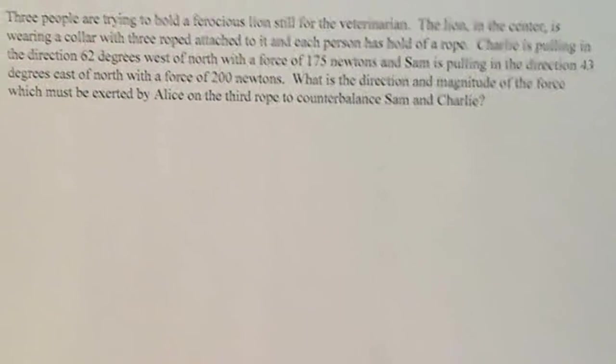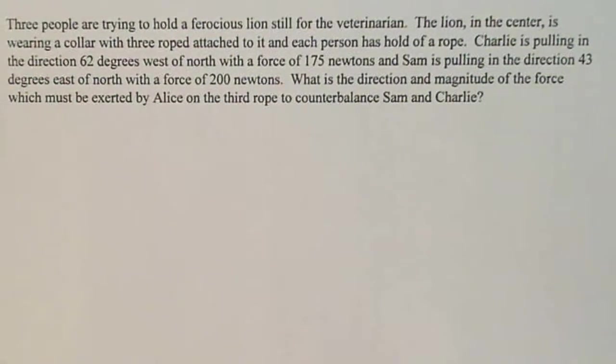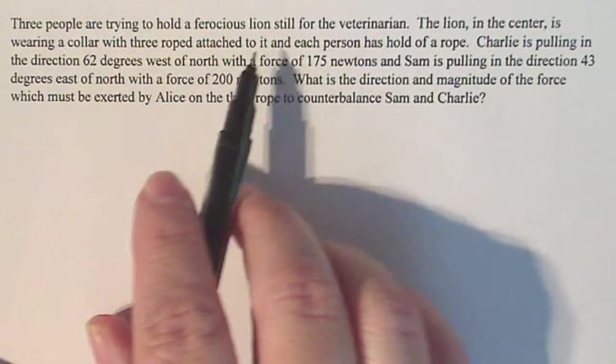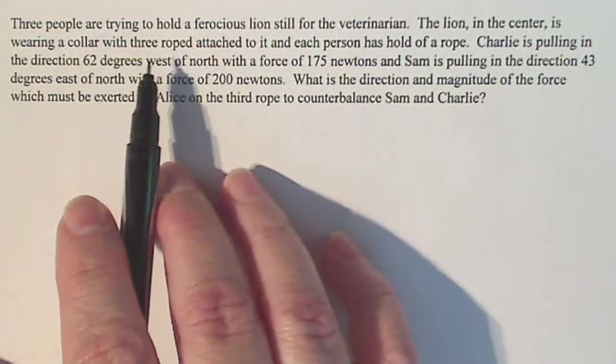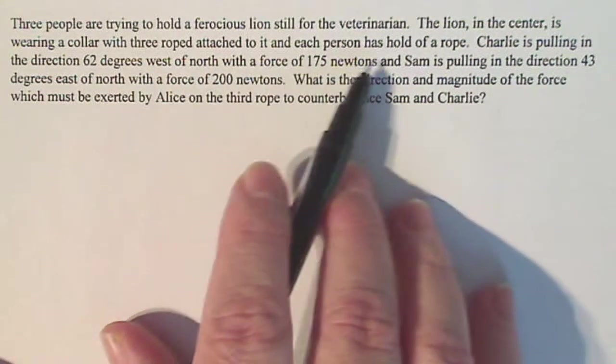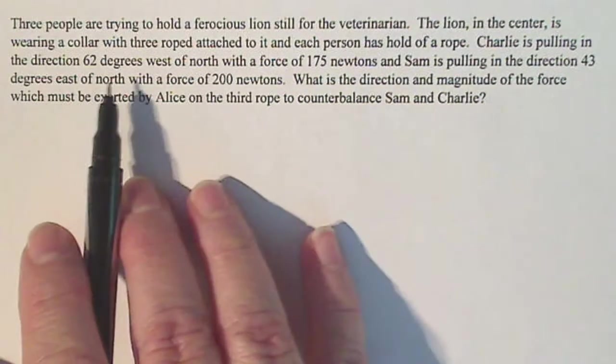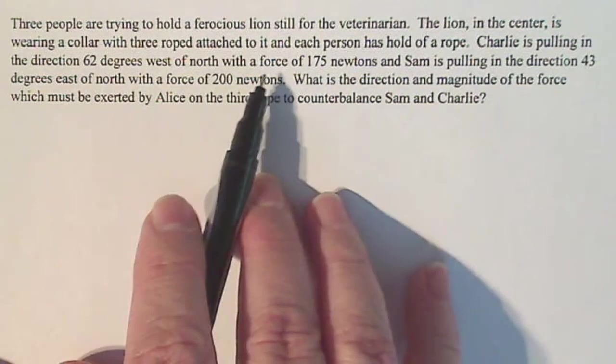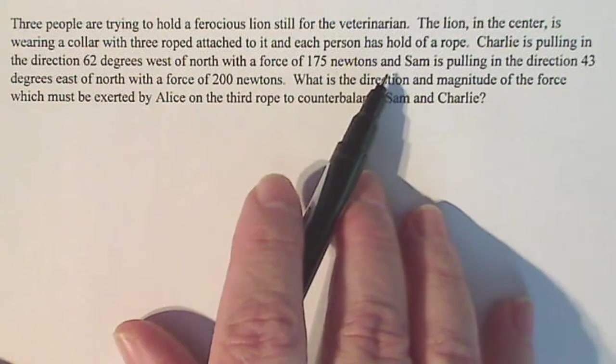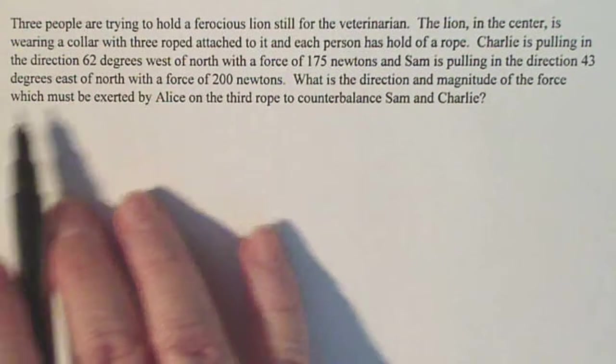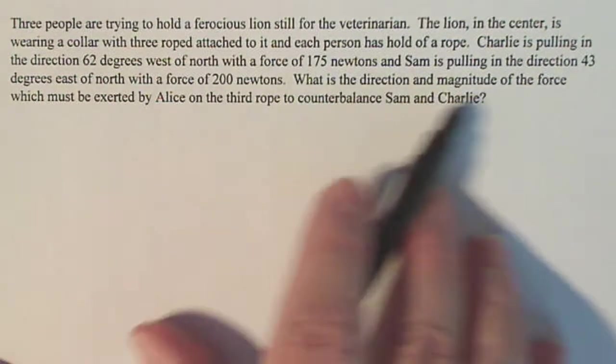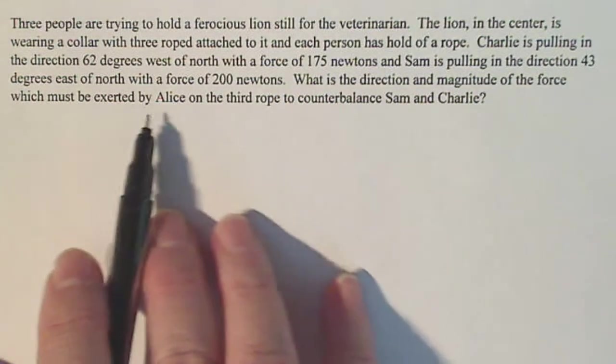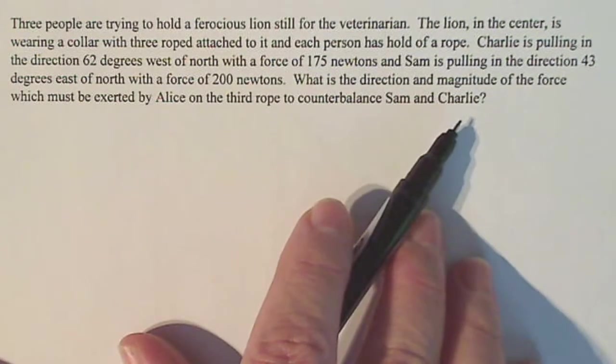This is a vector problem that we do in Calculus 3 here, so let's see what's going on. Three people are trying to hold a ferocious lion still for the veterinarian. The lion in the center is wearing a collar with three ropes attached to it, and each person has hold of a rope. Charlie is pulling in the direction 62 degrees west of north with a force of 175 newtons. Sam is pulling in the direction 43 degrees east of north with a force of 200 newtons. What is the direction and magnitude of the force which must be exerted by Alice on the third rope to counterbalance Sam and Charlie?